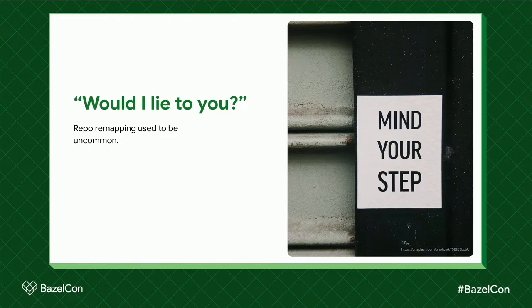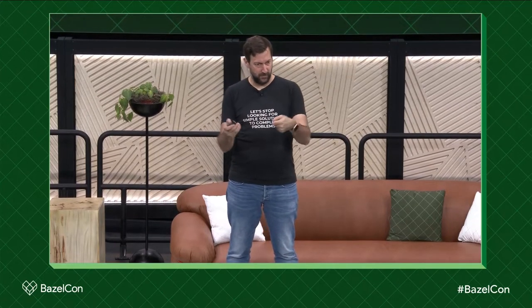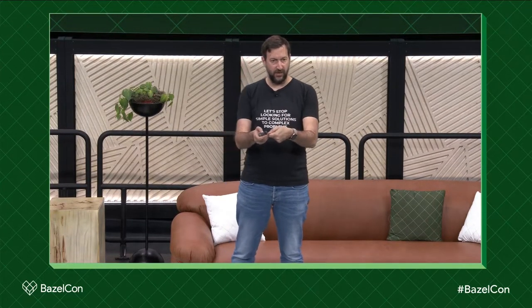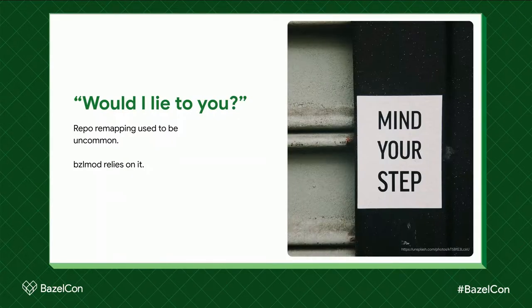Repo remapping allows you to go: this repo "foo" — I want to refer to it as "bar" in my build, and it'll be fine. Bzlmod does that. So when you say "I want to pull in Rules JVM External," it goes "I will let you refer to it as rules_jvm_external, but in reality I'm going to call it rules_jvm_external~~4.5~~i_love_cheese" or whatever. It's some magnificent name mangling. The way Apple Rules Lint works is you give it a string that is a label, which it will expand — but with repo remapping, that doesn't work.